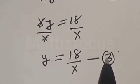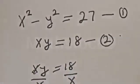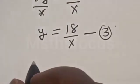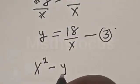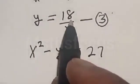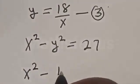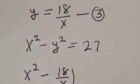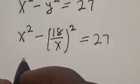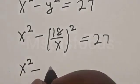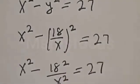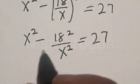Now substitute equation 3 into equation 1. That is, anywhere you see y, you put 18 divided by x. Equation 1 is x squared minus y squared is equal to 27. But y is equal to 18 divided by x, so we get x squared minus (18/x) squared is equal to 27.